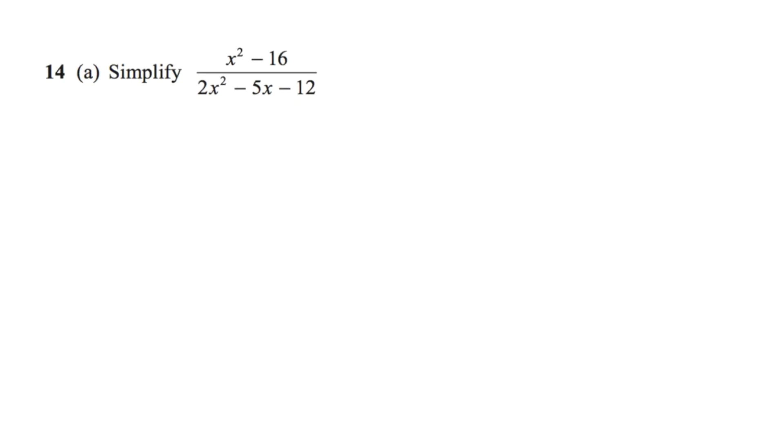The first thing we need to do is factorise the numerator and the denominator. Let's have a look at the numerator, x squared minus 16. This is the difference of two squares, so we can write x squared minus 16 equals open bracket x plus 4 close bracket x minus 4.